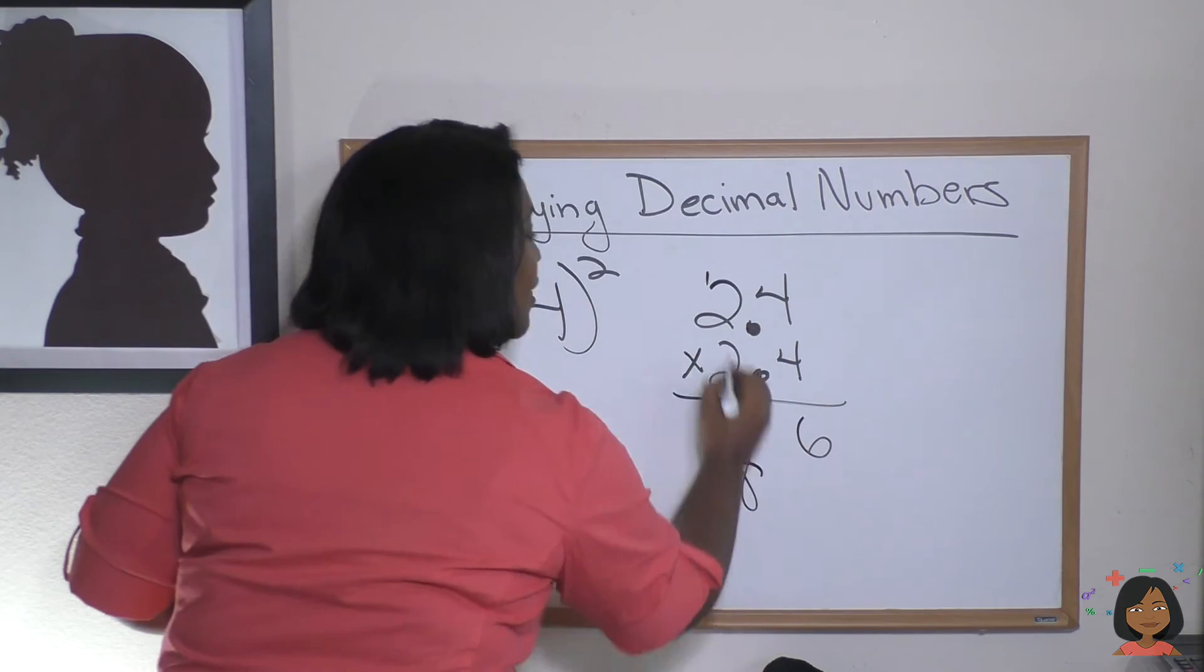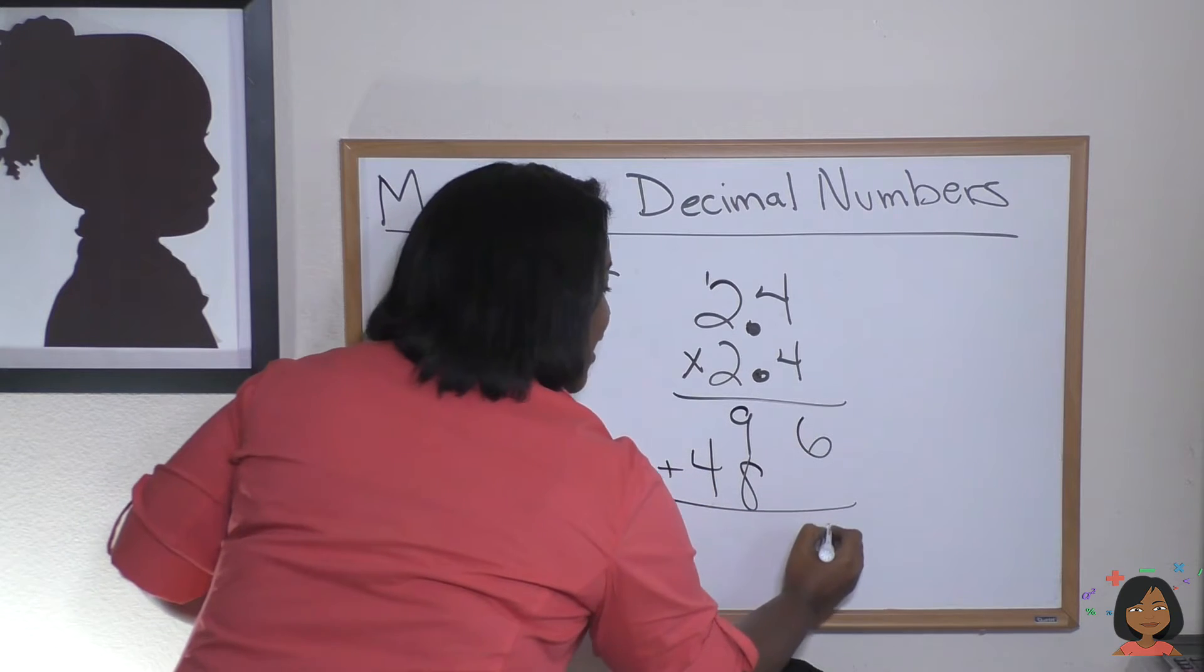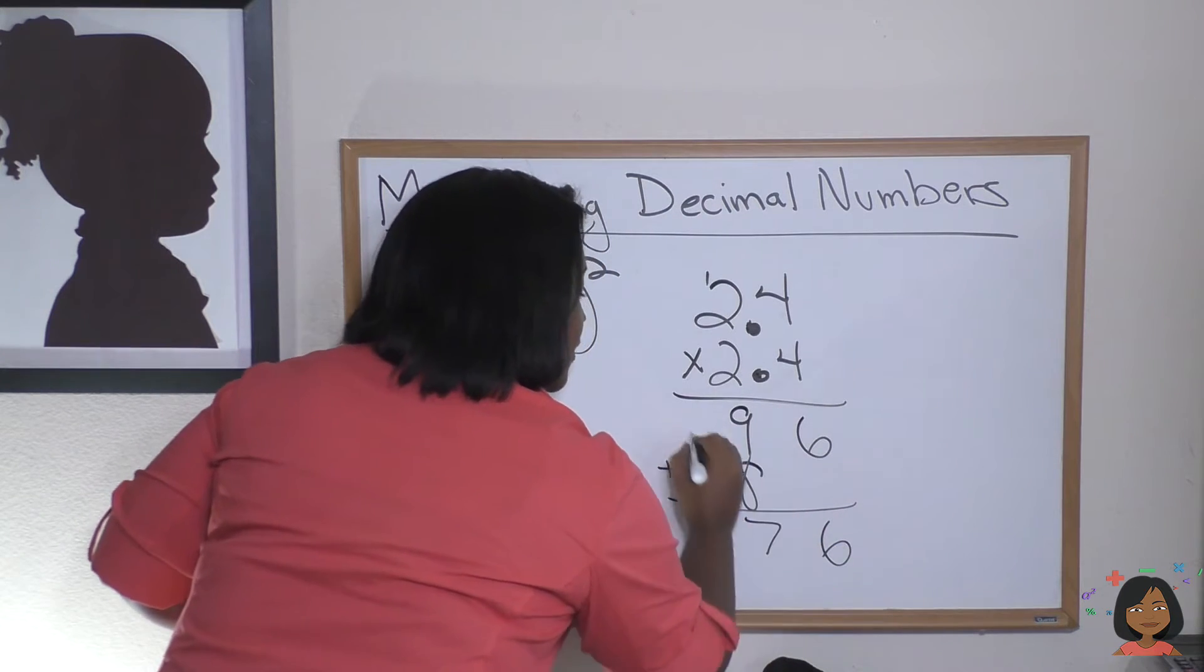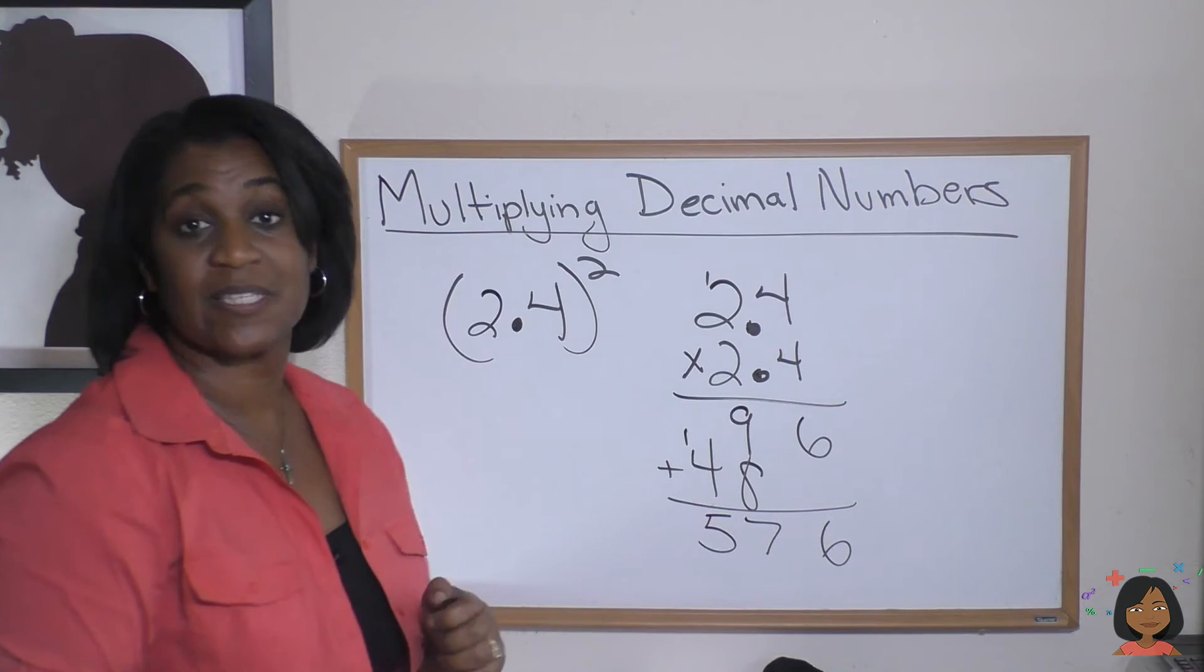Four times two is eight. Two times two is four. Let's add it up. Okay, we have a number. 576.